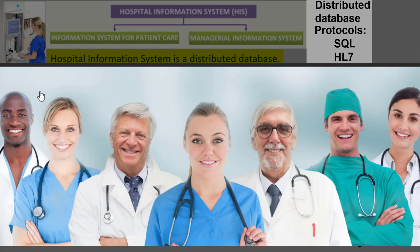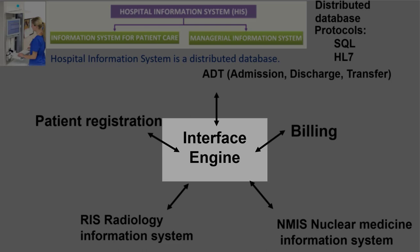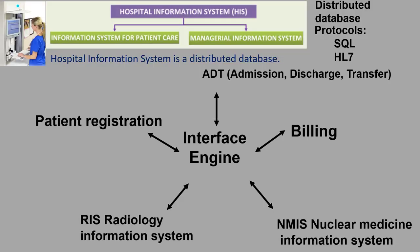The hospital information system is a distributed database that interfaces with all healthcare professionals within the hospital for transfer of information, patient information, and managerial information. It is easy to think of it as an interface engine that has access to all different portions of the hospital system and its interconnectivity.